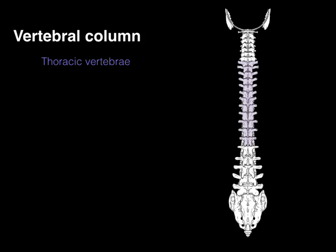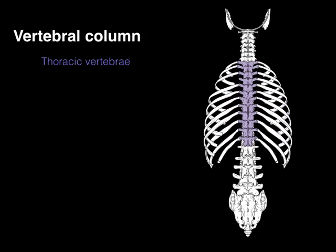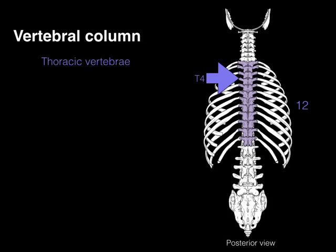The thoracic vertebrae are located in the thoracic region. They're easy to find because a pair of ribs comes off each one. From rib one to rib twelve, we have the first and last thoracic vertebrae — twelve total, numbered sequentially T1 through T12.